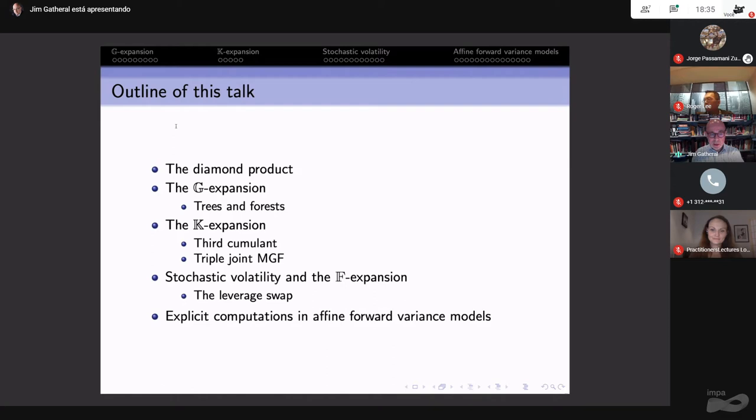Then we'll apply this to stochastic volatility. Rough volatility does enter this talk, as you would expect. We'll do some explicit computations in affine forward variance models. In particular, one of the favorite affine forward variance models is the rough Heston model.